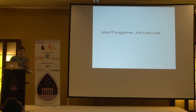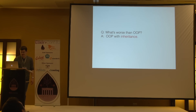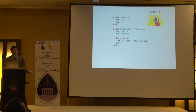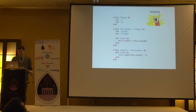Maybe someone could say this is bad code — but perhaps it's not that bad. So what's worse than OOP? It's OOP with inheritance. And this library has that. So maybe we have a shape, then we can have a rectangle, and maybe we can have a square, and so on and so forth.